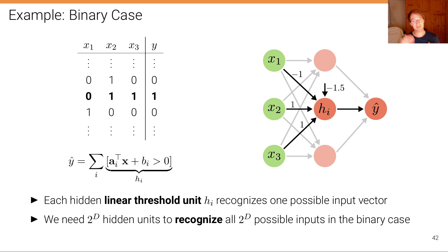So as you can see, we can design these units and their weights in a way that each of these units corresponds or recognizes one particular situation and then outputs the corresponding value. However, we need 2 to the power of d, an exponential number of units to recognize all possible inputs, and this is the binary case. It becomes even more problematic if we have the continuous case.